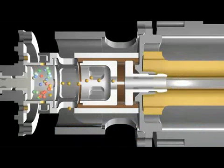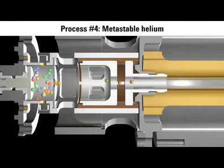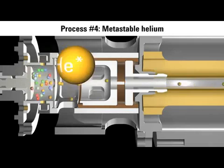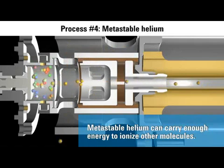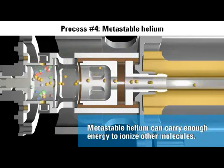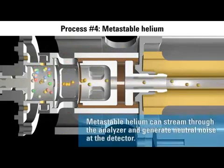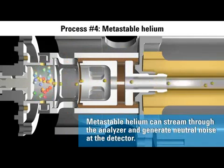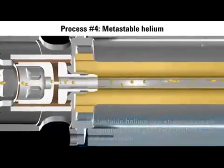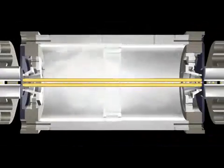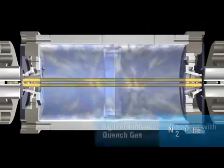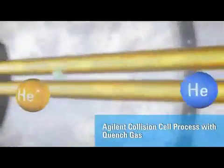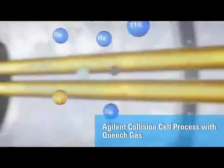Before continuing to the collision cell, one more process must be mentioned. An EI source produces a large number of highly energetic metastable helium atoms. These highly energetic atoms follow a random path like any other neutral until removed by the pump. Some will follow a path parallel to the analyzer and have a high probability of traversing the entire analyzer assembly to the HED-EM detector. During the development of the 7000, Agilent engineers realized a small flow of helium added to the nitrogen collision gas was a very effective way to reduce the transmission of metastable helium through the collision cell. We call this patent-pending solution helium quenching.